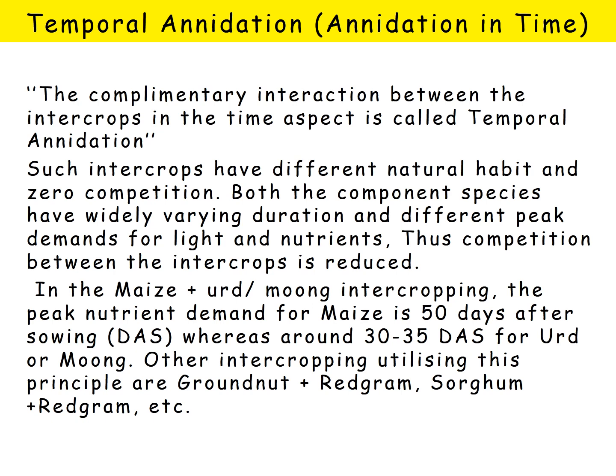Both component species have widely varying durations and different peak demands for light and nutrients. Every crop has a peak nutrient demand in the time aspect — that is the duration of the crop. Thus, competition between the intercrops is reduced.